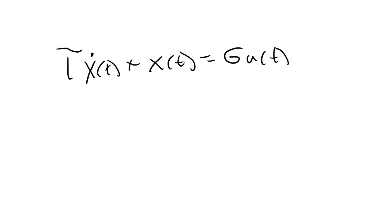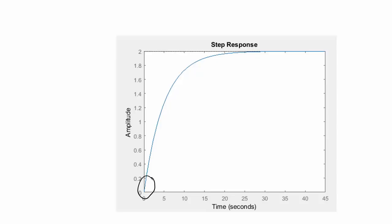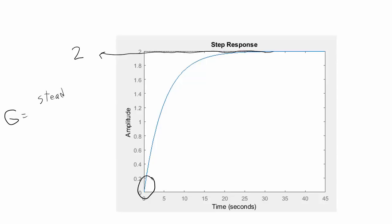Let's suppose that we've identified our system as a first order response. In that case, we know that the system equation is going to look like this. In order to complete this model, all we need to do is find a value for tau and find a value for the gain g. The gain g is defined as the steady state output value divided by the input. For example, suppose the steady state output value is 2. If the input value was also 2, then the gain would be g equals 1. But if the input was 1, then the gain would be g equals 2.